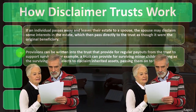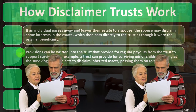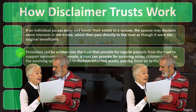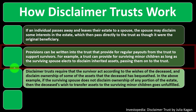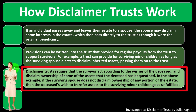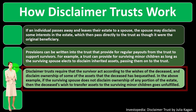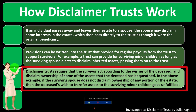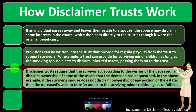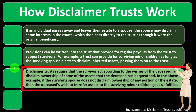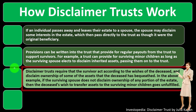There's no ownership by the individual spouse — the trust has ownership of the assets — but you could still get access to it to some degree, hopefully by the terms of the trust, such as income being used for support. Disclaimer trusts require that the survivor act according to the wishes of the deceased and disclaim ownership of some of the assets. If the surviving spouse does not disclaim ownership of any portion of the estate, the deceased's wish to transfer assets to surviving minor children goes unfulfilled.